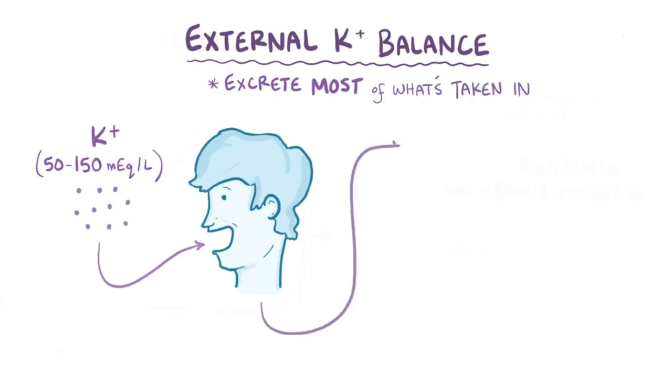This external balancing act is largely taken care of by the kidneys, where excess potassium is secreted into a renal tubule and excreted in the urine. Also though, a small amount of dietary potassium is also lost via the gastrointestinal tract and the sweat.